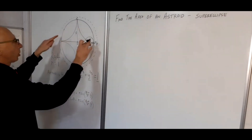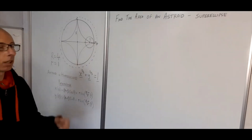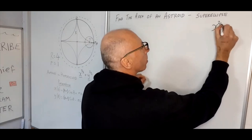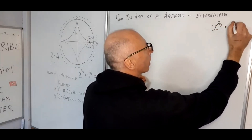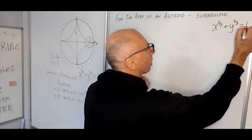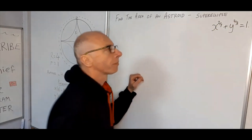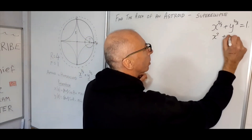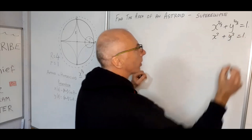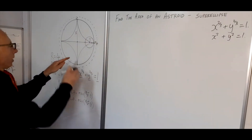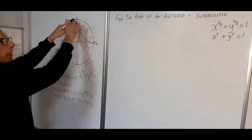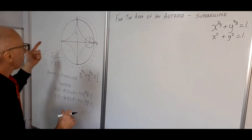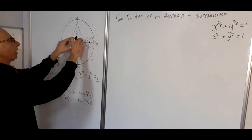If you want to make this shape on a grapher on your computer, what you need is x to the two-thirds plus y to the two-thirds equals one, which is a little bit similar to a circle: x squared plus y squared equals one. So the circle is x² + y² = 1, and this hypocycloid is x^(2/3) + y^(2/3) = 1, and we want the area inside.